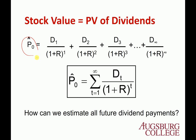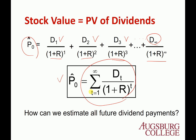The price of the stock equals the first year dividend, second year dividend, third year dividend, all the way to infinity — it's an infinite problem. Mathematically, this is written as sigma t equals 1 to infinity of Dt divided by (1+r)^t. We need to estimate this dividend, since it's not predetermined unlike bonds, and we also need to find R, the required rate of returns.